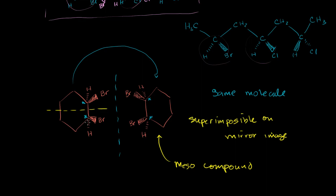Now, these would not be the same molecule if I changed one bromine to a fluorine and the other to a fluorine — then you would not have this symmetry. These would be mirror images, but they would not be superimposable. So if those were fluorines, these would actually be enantiomers, not a single meso compound — it would be two different enantiomers, and one would have an R configuration and one would have an S configuration, using the naming conventions from the last few videos.